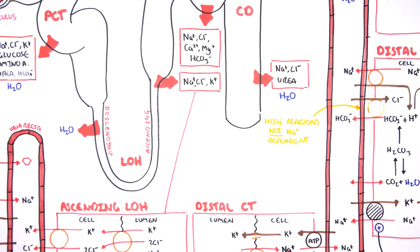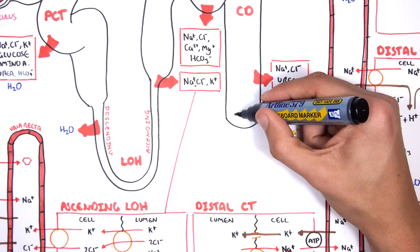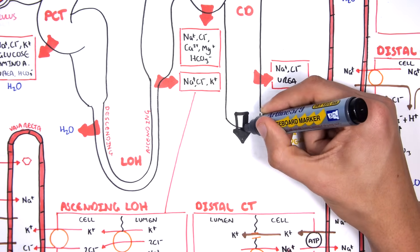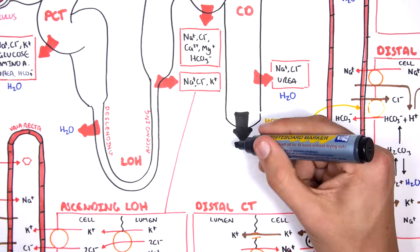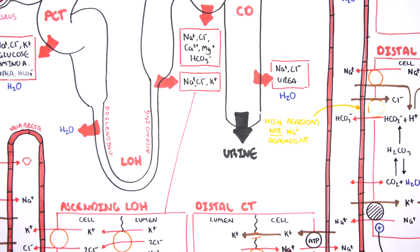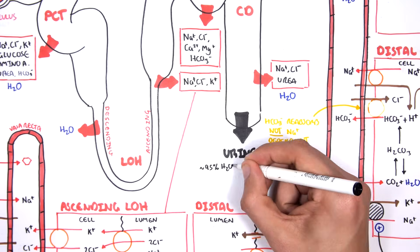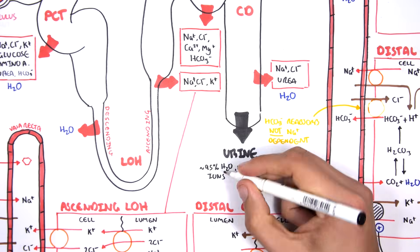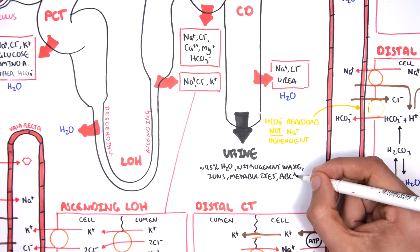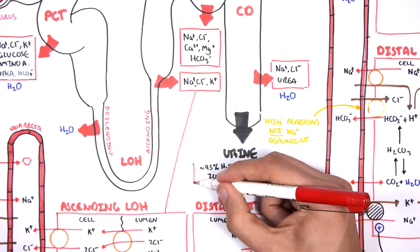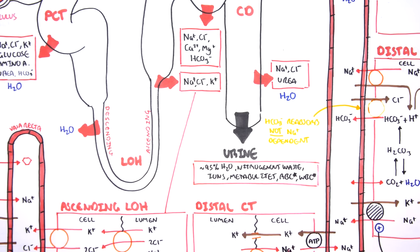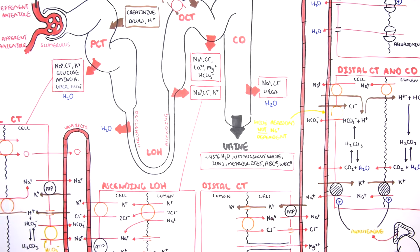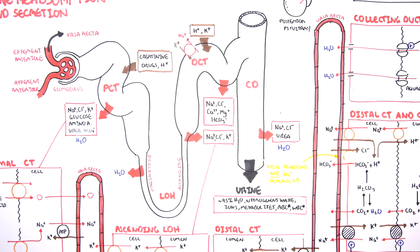After all the reabsorption and secretion that takes place along the tubule of the nephron, urine is produced. What is in urine? It's mainly water, but it also contains nitrogenous waste (which is toxic if it stays in the body), lots of metabolites, and can contain red blood cells and white blood cells — usually in extremely low numbers. However, elevated red and white blood cell numbers in urine indicate an infection or some form of pathology occurring along the urinary tract.